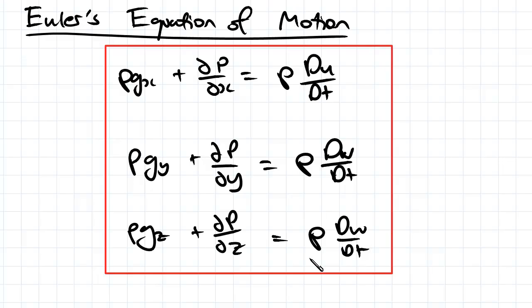So the questions specifically say we've got inviscid flow, and therefore you're going to be able to make the assumption that all of those shear stresses are going to be equal to zero.